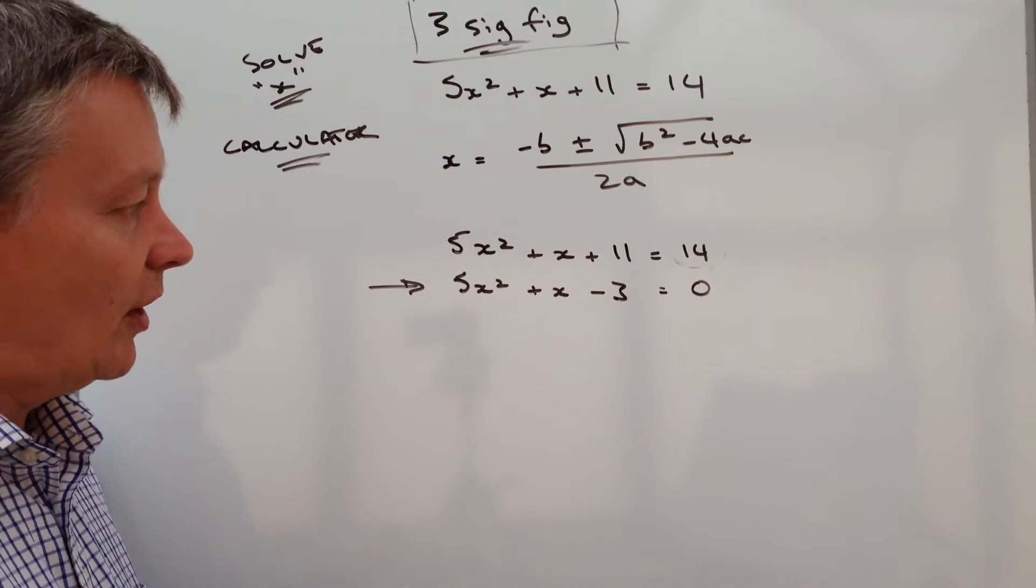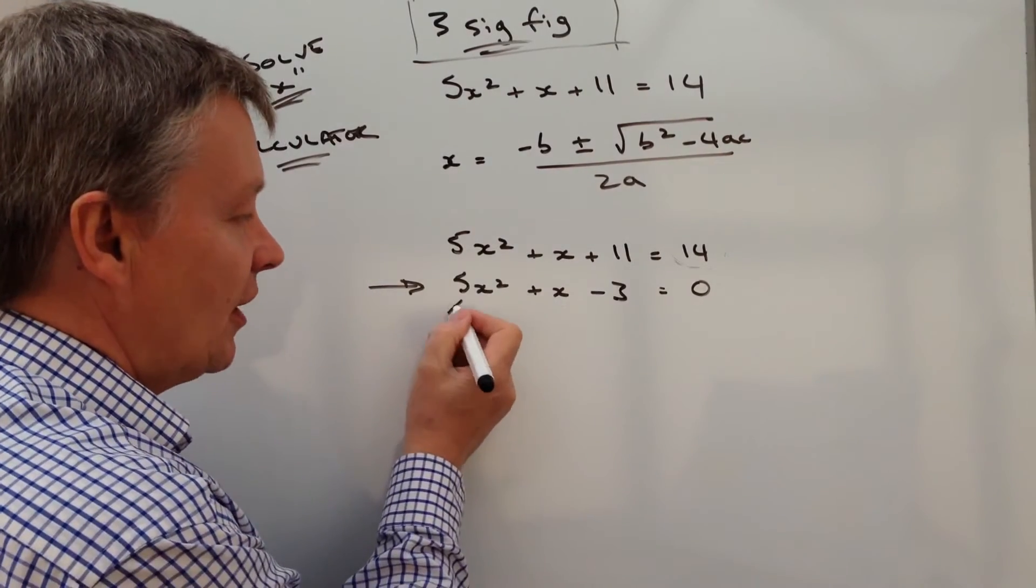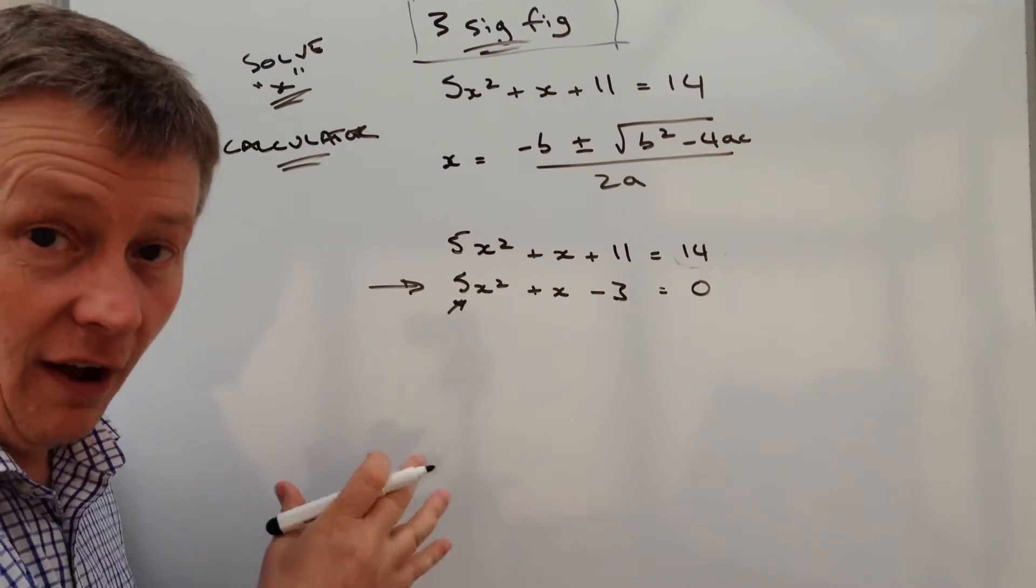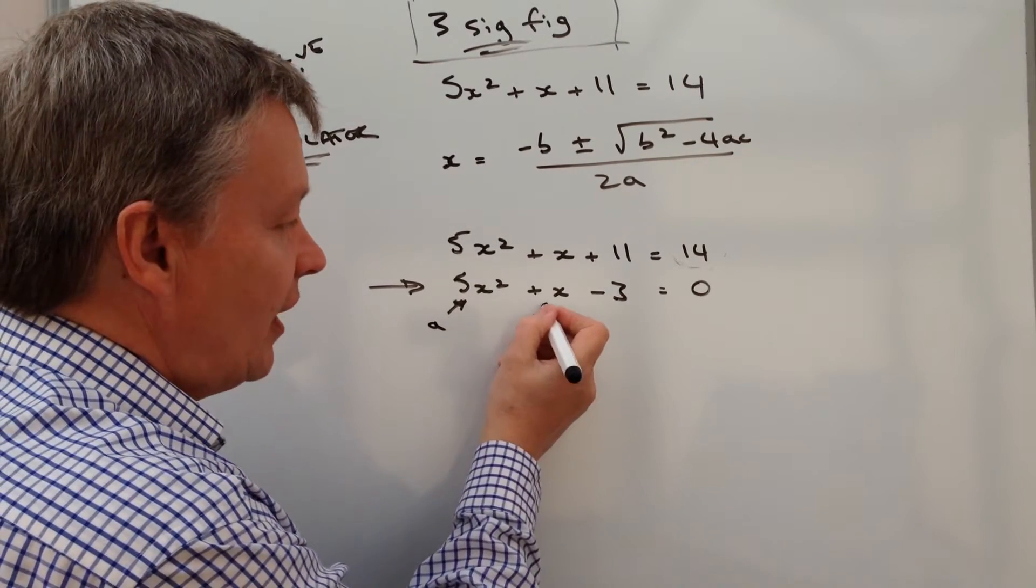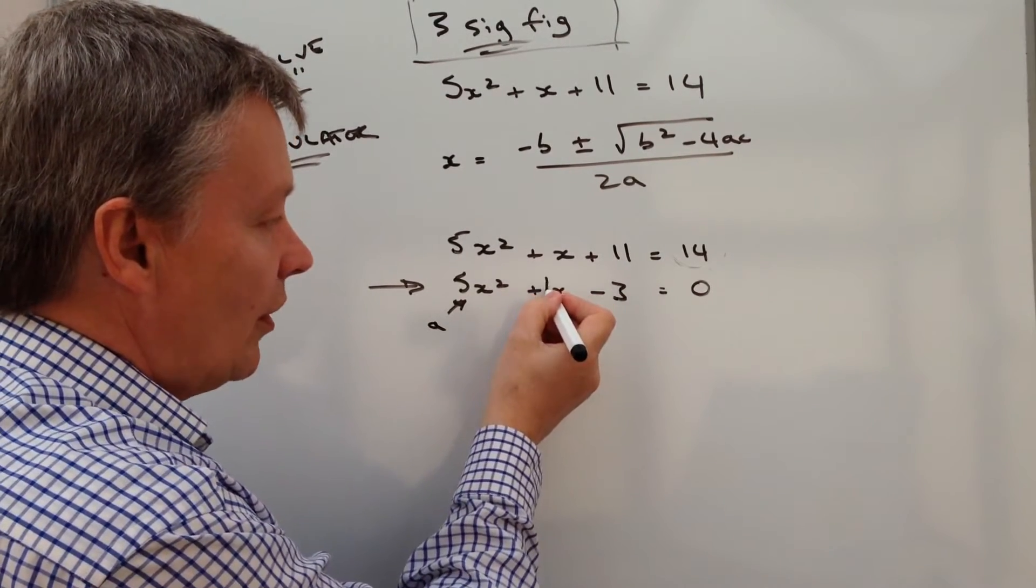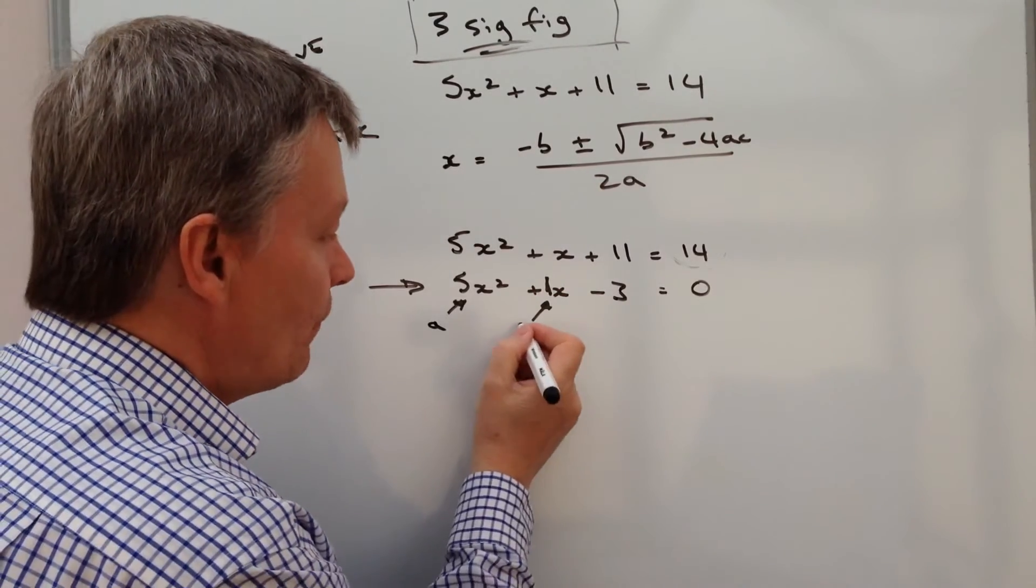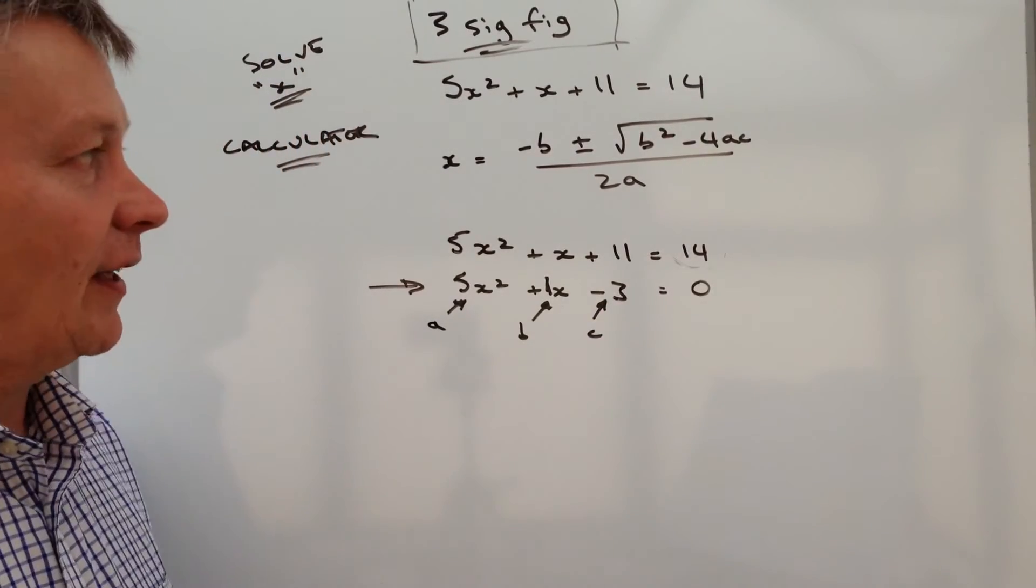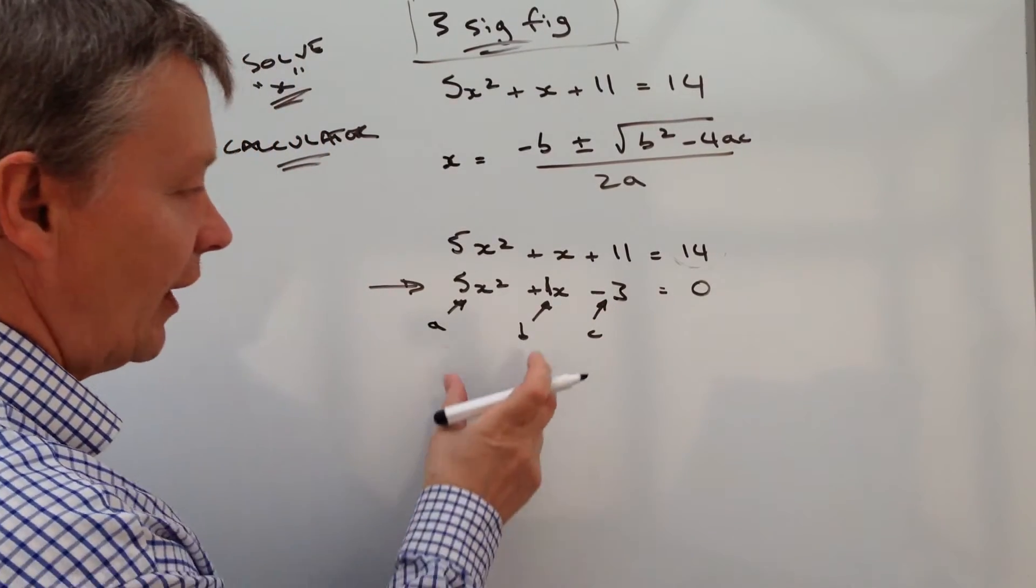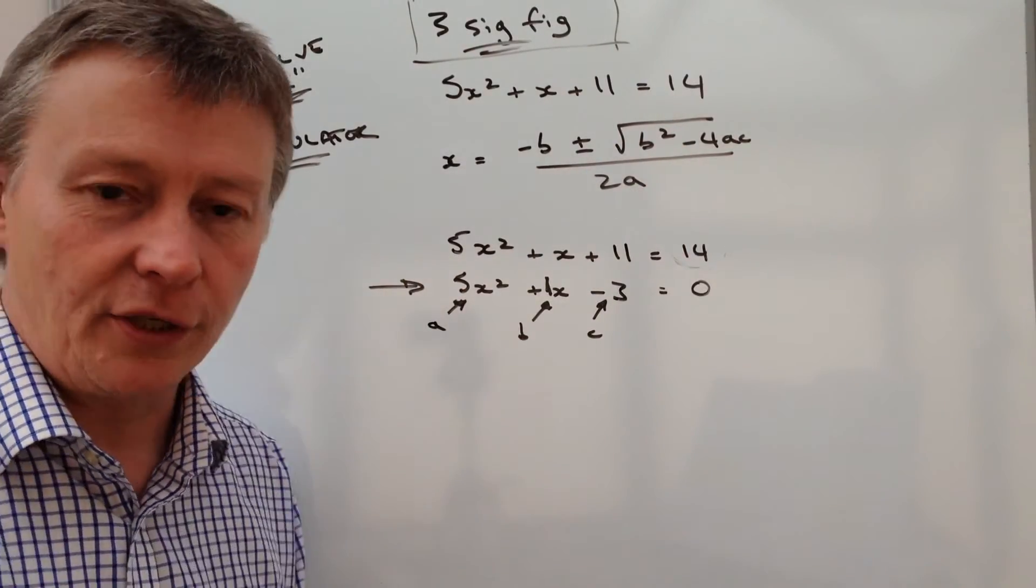The next bit is we need to look at this formula and say, this number here, 5, is the value of a. This number here, which is a 1, so this is 1x, is the value of b. And this number here, which is minus 3, is the value of c. Then effectively we take these values and plug them into this equation.